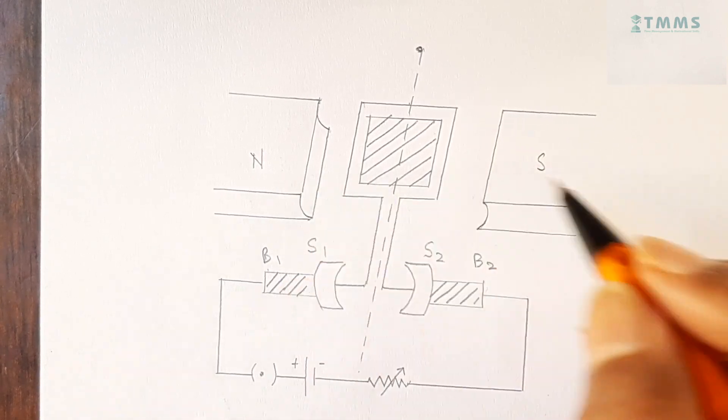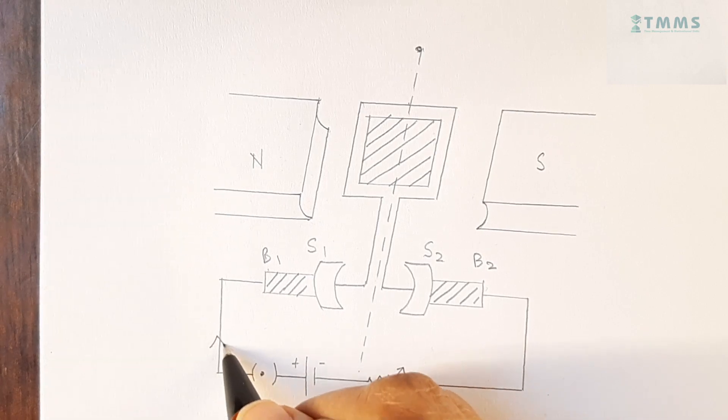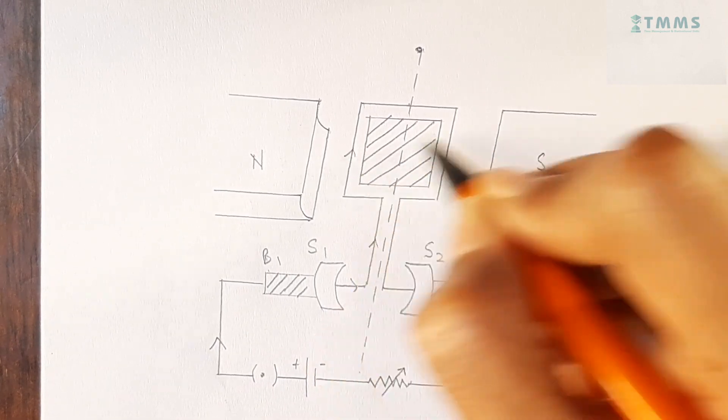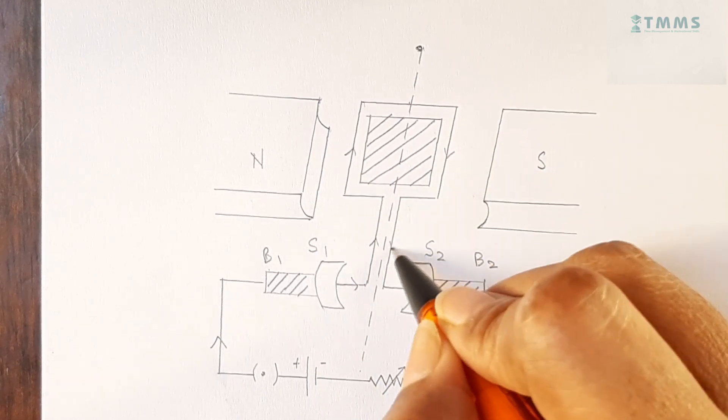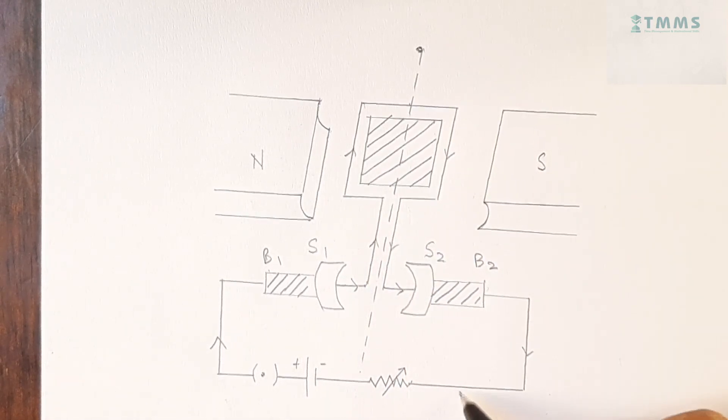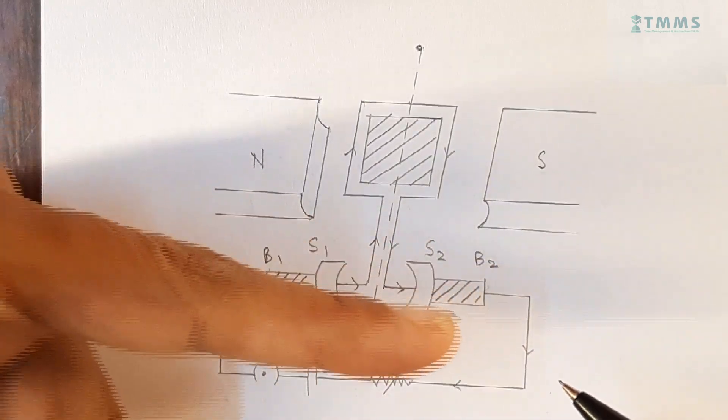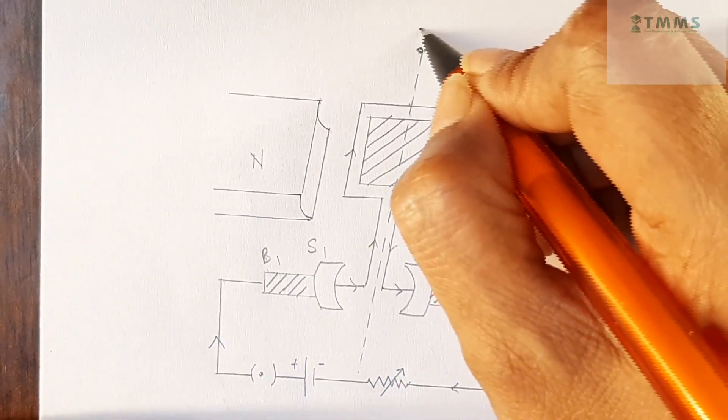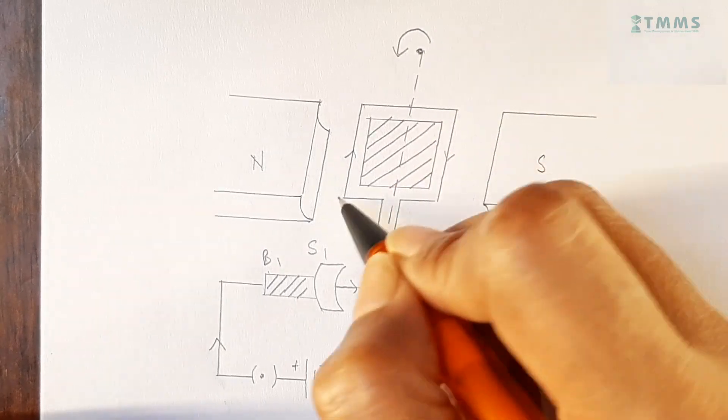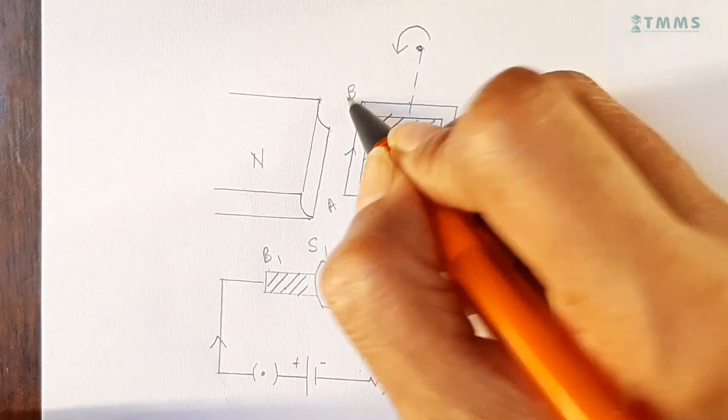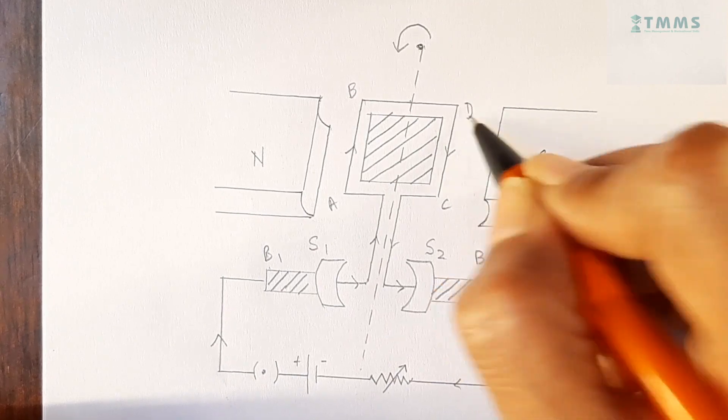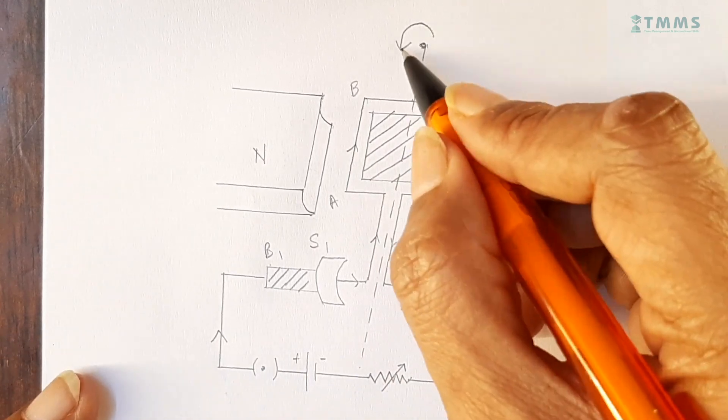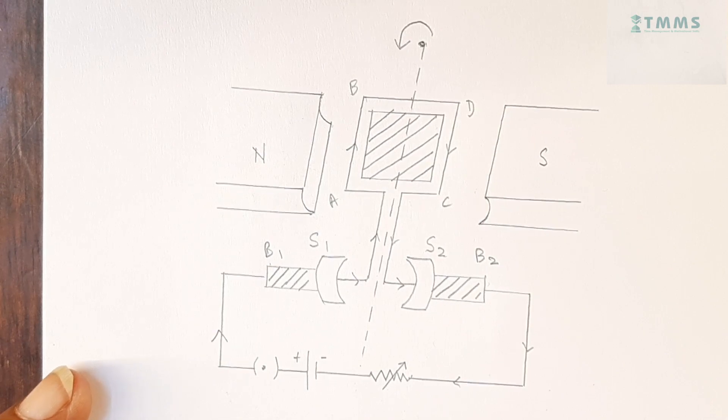And now, this is north. This is south. And the current is going like so. And so, applying Fleming's left hand rule. We will have this arm turning up. If I call this as A, B, C, D. Then, C, D will be turning up. And, A, B will be turning down. So, this is the anti-clockwise rotation. So, as you can see that this takes slightly longer time.